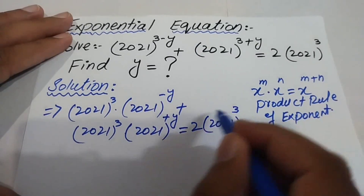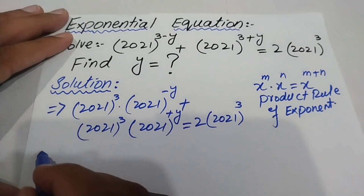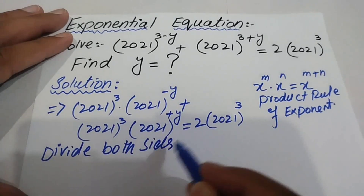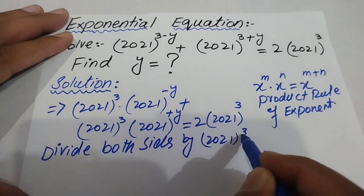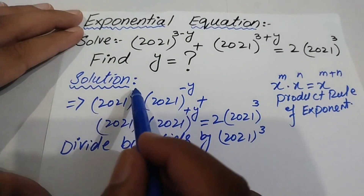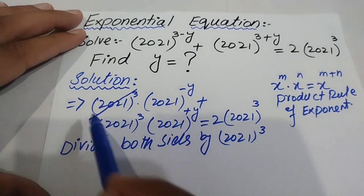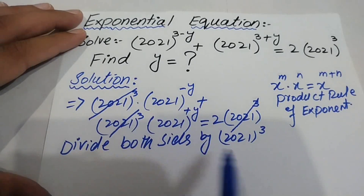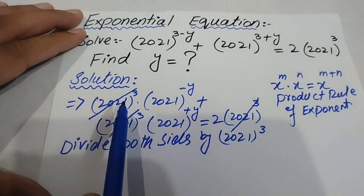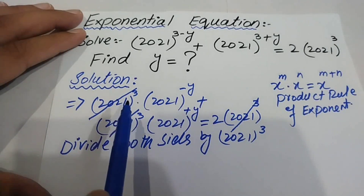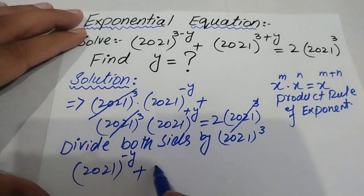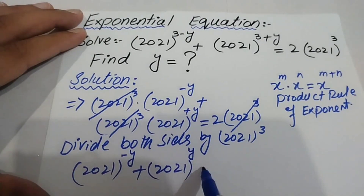After that, we divide both sides by 2021^3. When we do this, the term 2021^3 cancels out from each term on both sides, and we get 2021^(-y) + 2021^(+y) = 2.